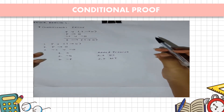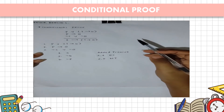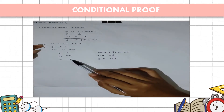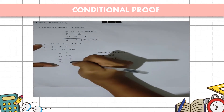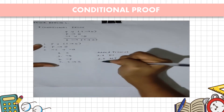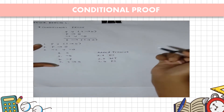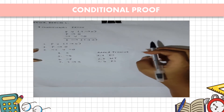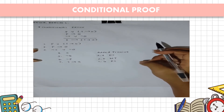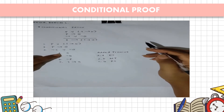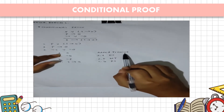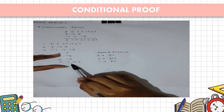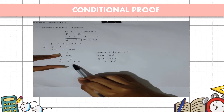We can then apply disjunctive syllogism again using our first and sixth premises. Once we are essentially done with the conditional proof, we end it by taking the fourth premise — our added premise — and the last premise, and separating them using an implication to form our conclusion.